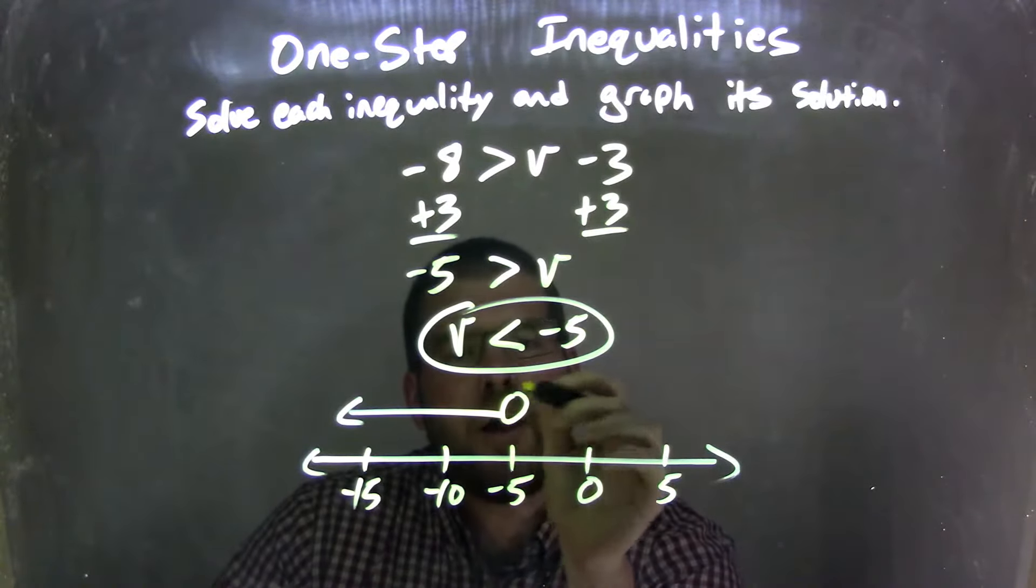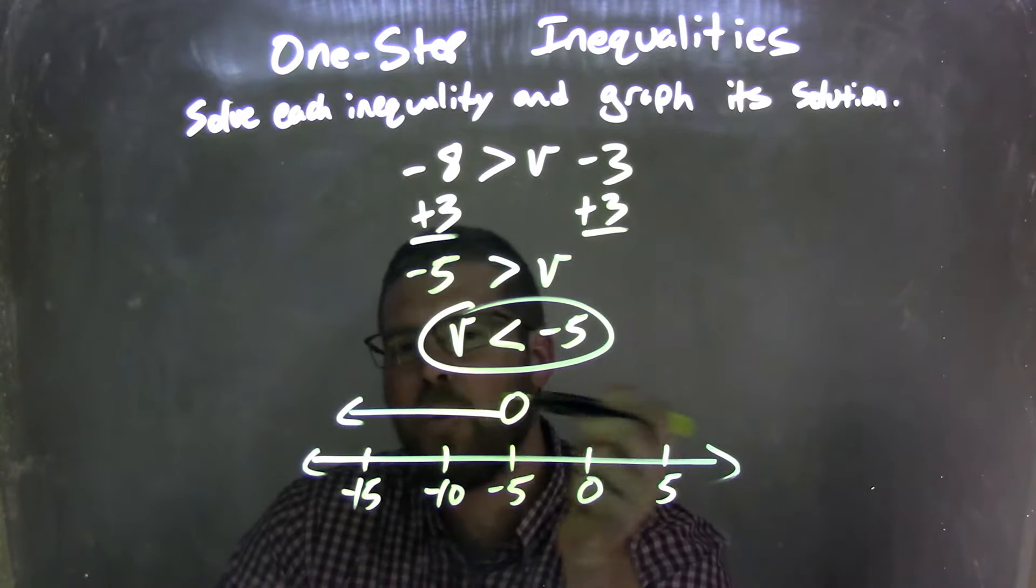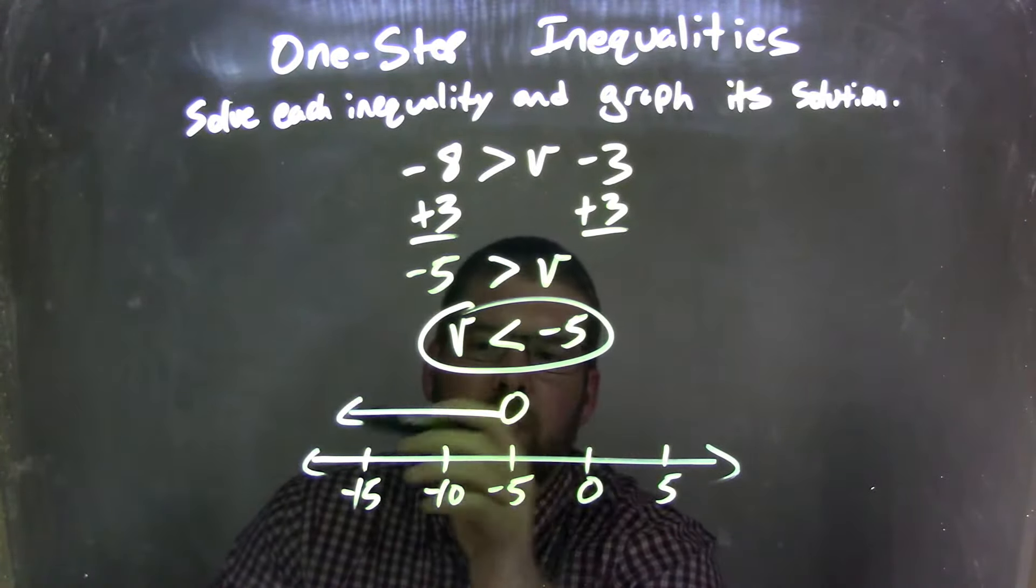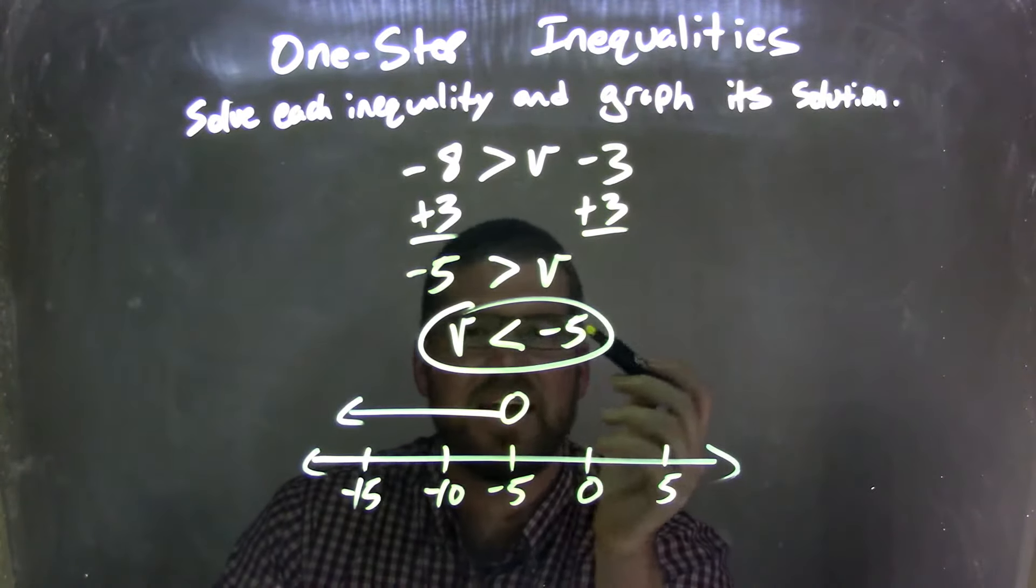So since it's not equal to, I put the open circle, right? It doesn't equal negative 5, it's just less than. And then since it's less than, my arrow went to the left. And so this graph here represents my final answer, which is v is less than negative 5.